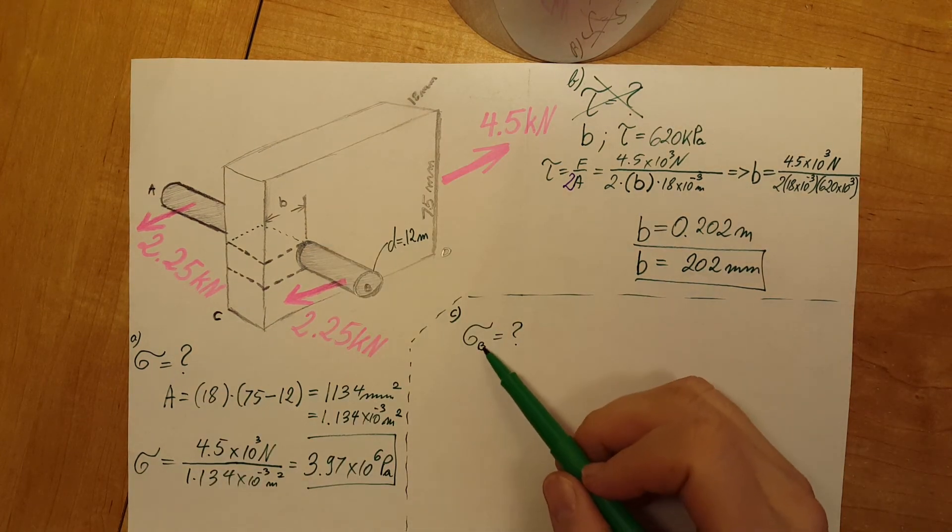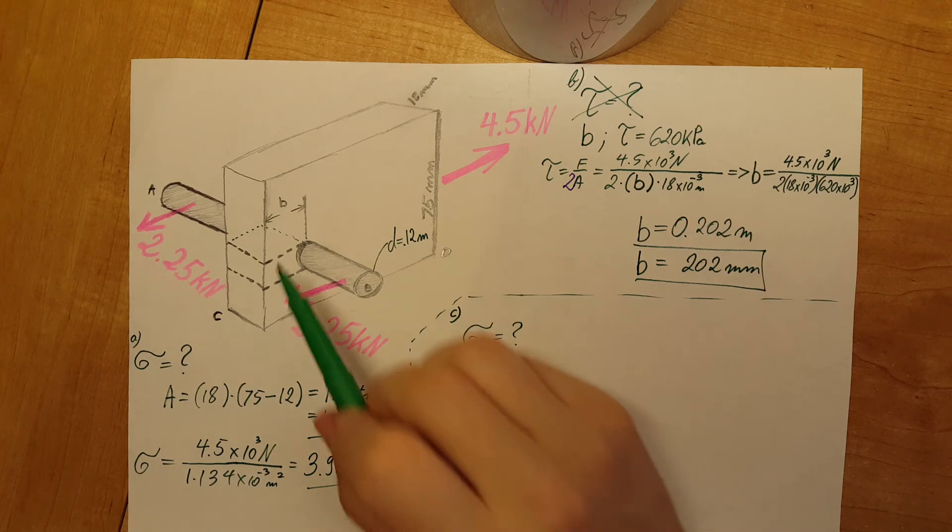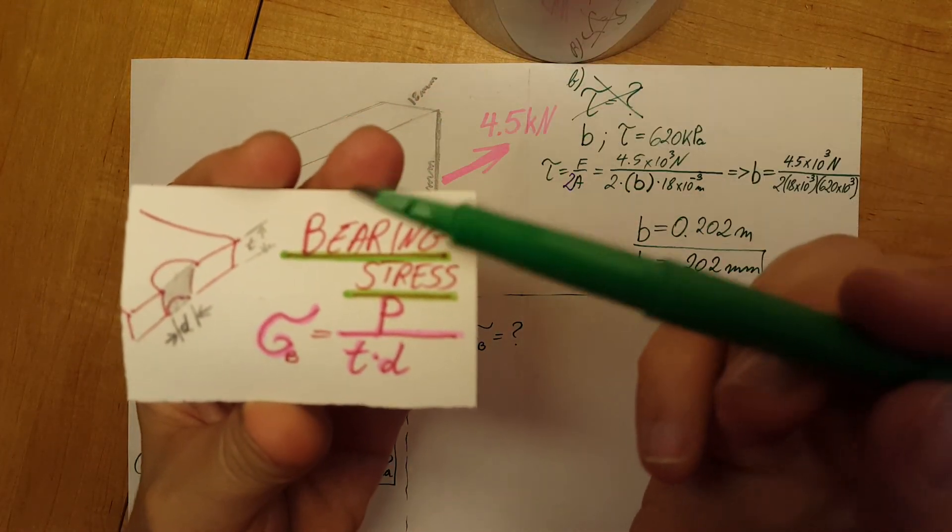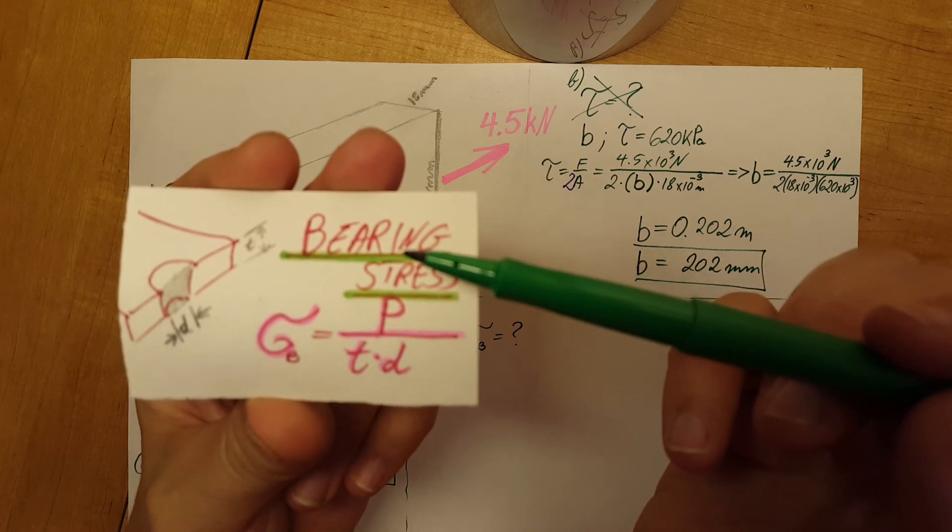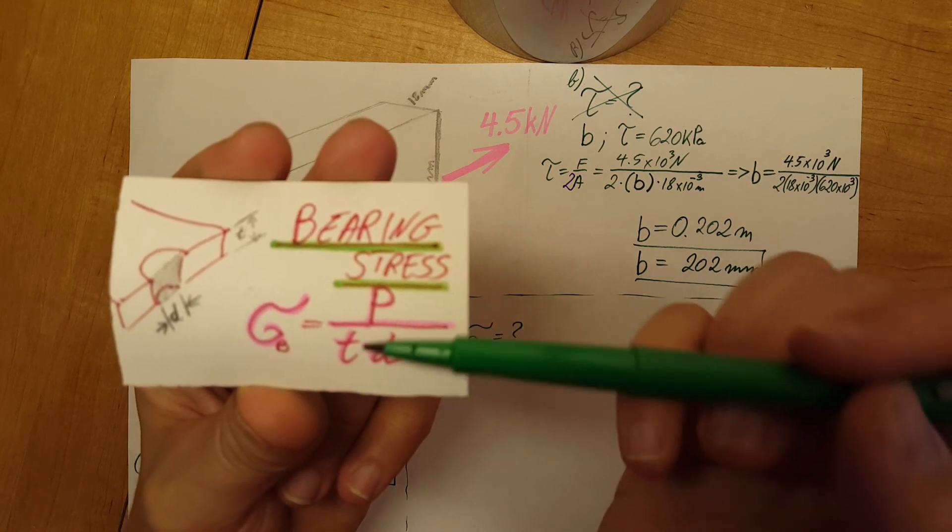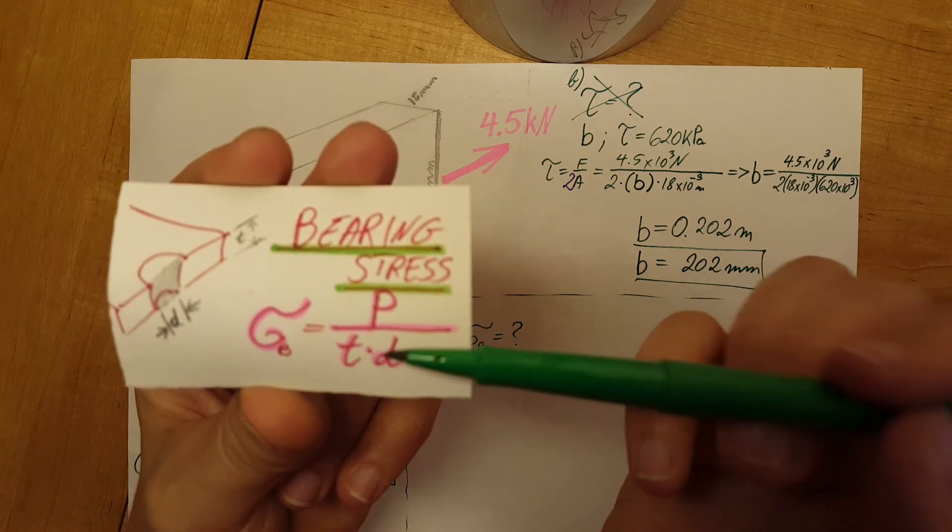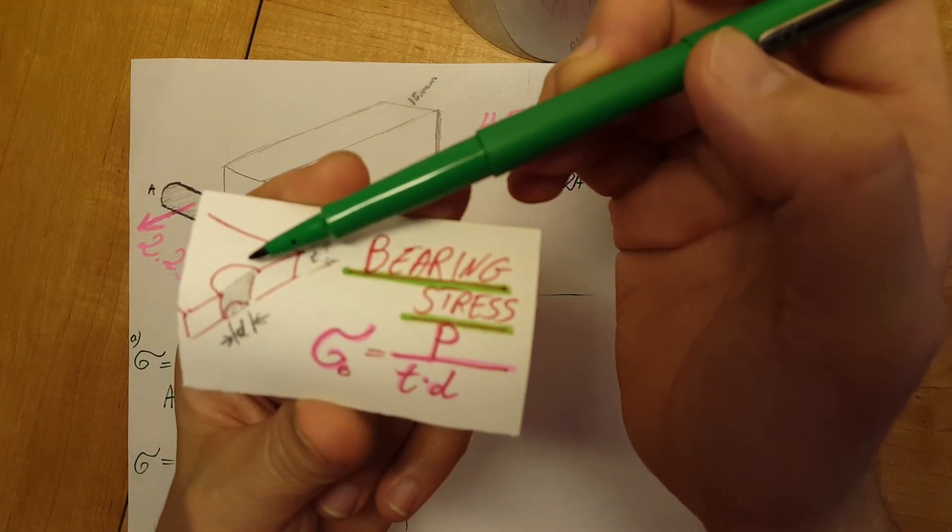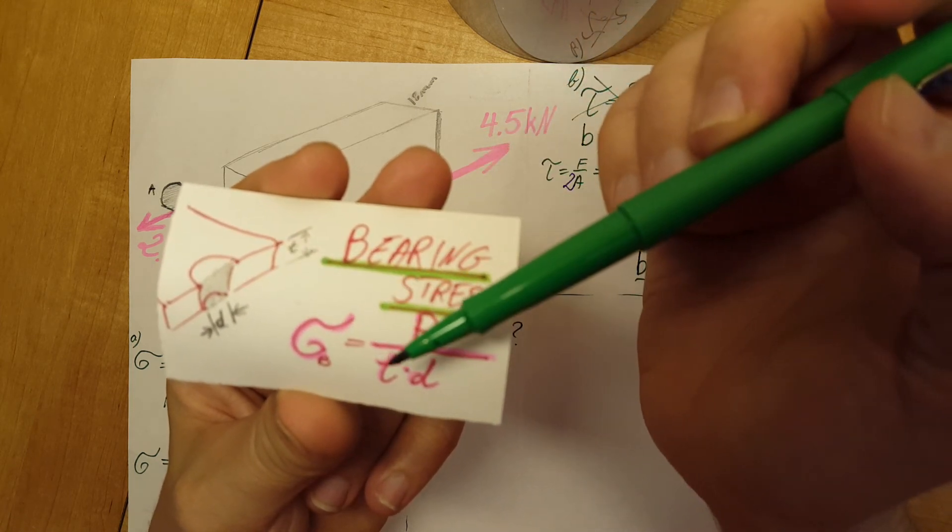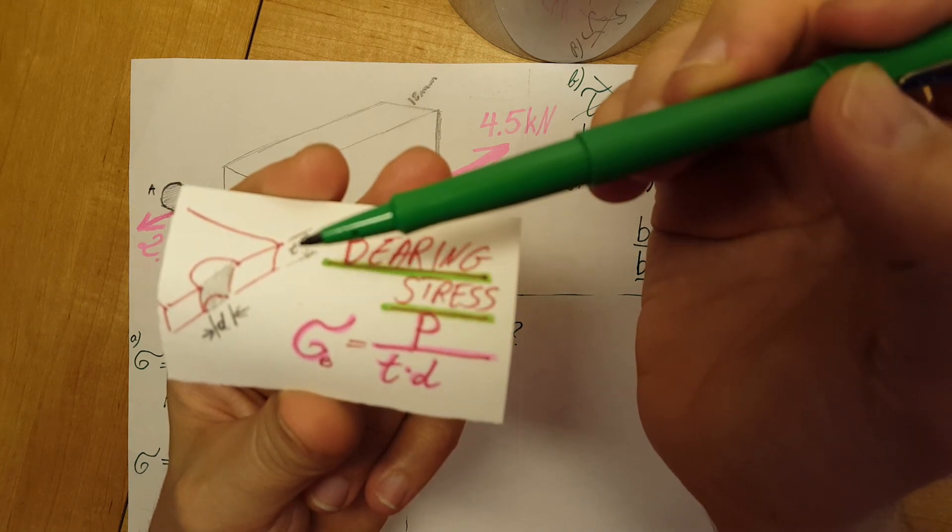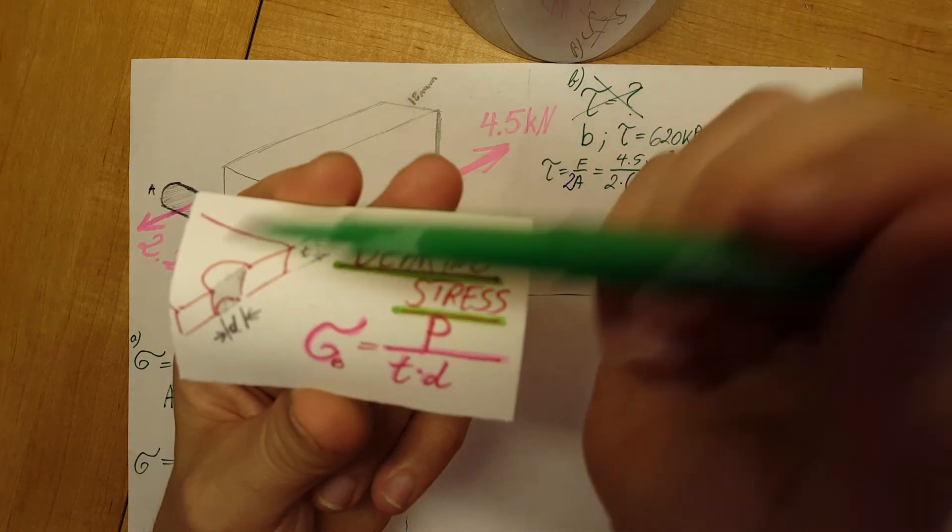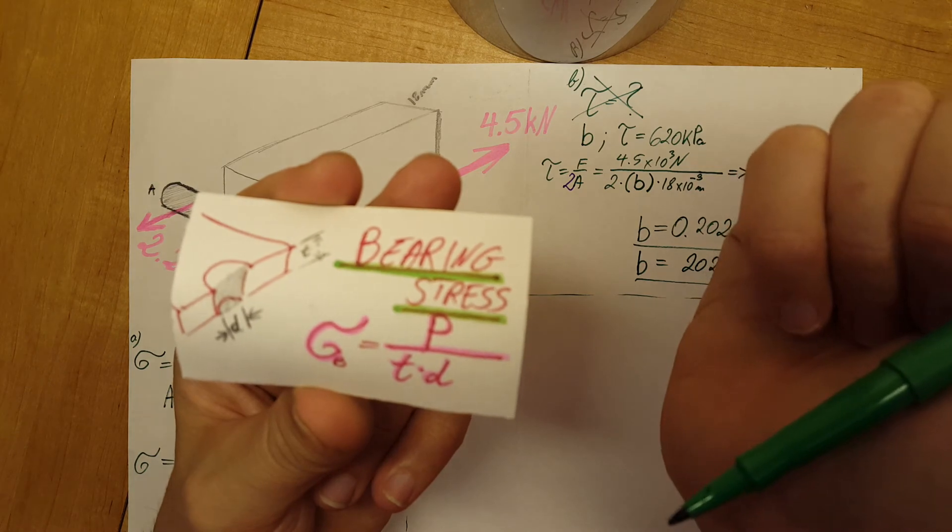For part C they want us to find the average bearing stress that we have in the wood. The stress formula is the same as before, force over area, but let's take a look at which area we're going to work with. This is where our rod would go across the wood beam, so the area will be defined by the thickness of the wood times the diameter of the rod, the shaded area that you can see in this little sketch.